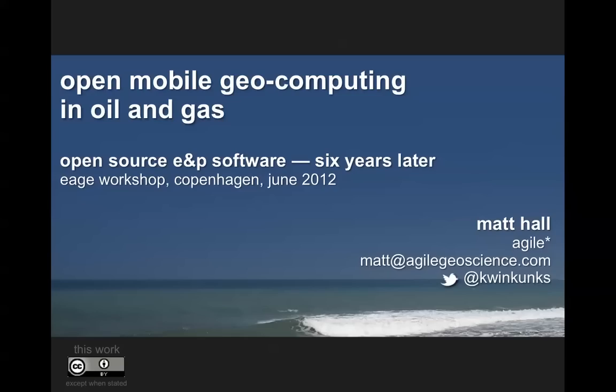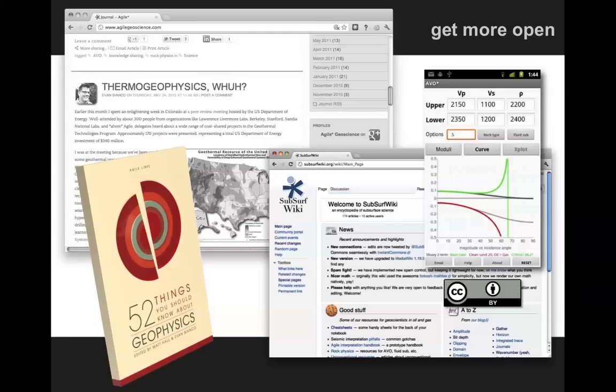The audience was mostly geophysical developers from academia and industry. Talking about open source mobile software, open source is kind of a philosophy for Agile. Our blog, our wiki, we just did a book on geophysics, and the software that we do is all permissively licensed under Creative Commons terms or, for the software, BSD-style licenses.